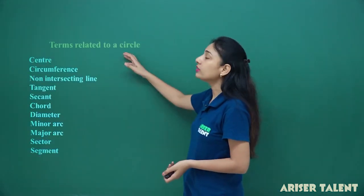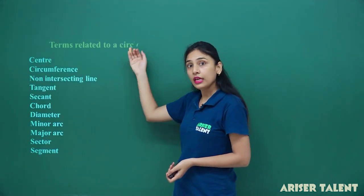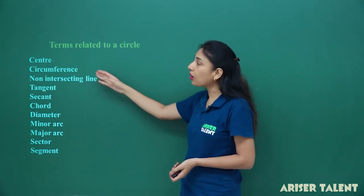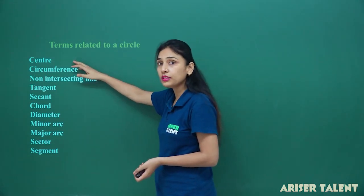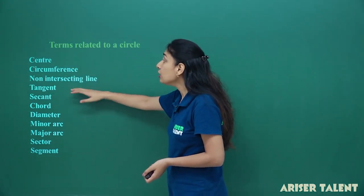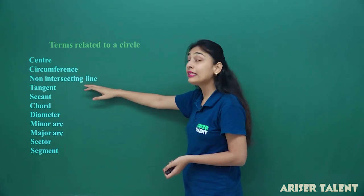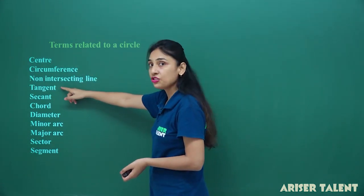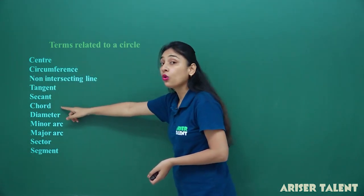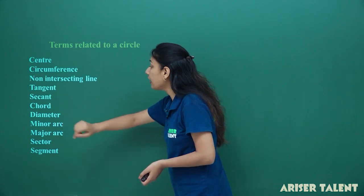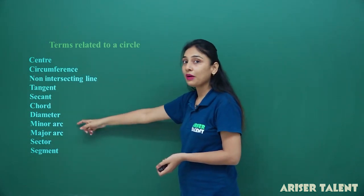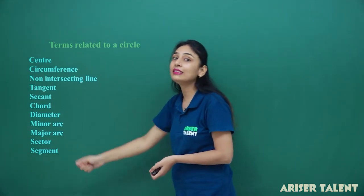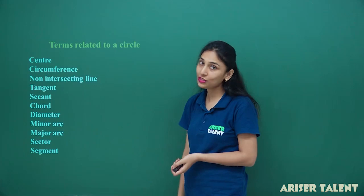Terms related to a circle. In this particular segment we will talk about: center of circle, circumference of circle, non-intersecting line, tangent, secant, chord, diameter, minor arc, major arc, sector, and segment.